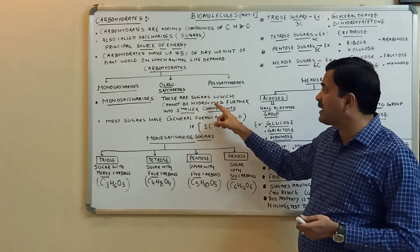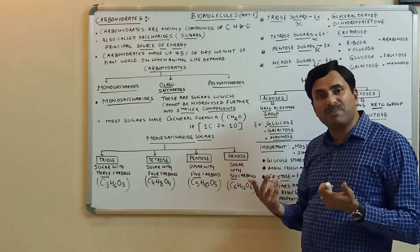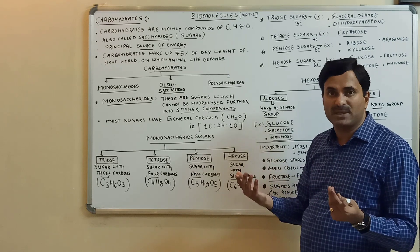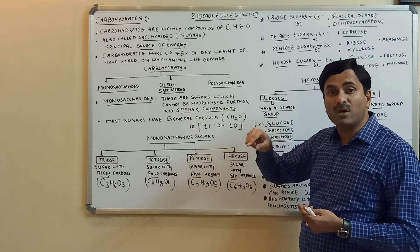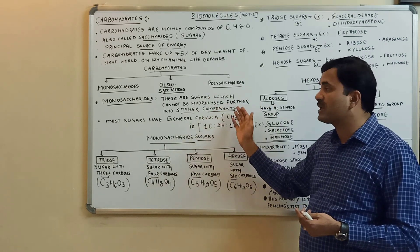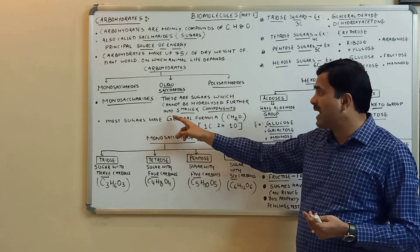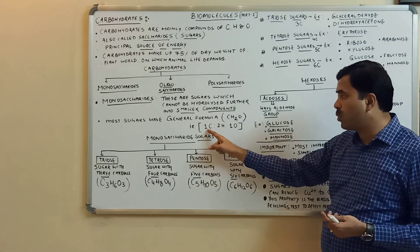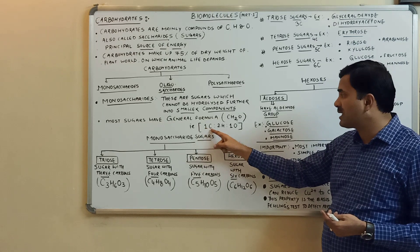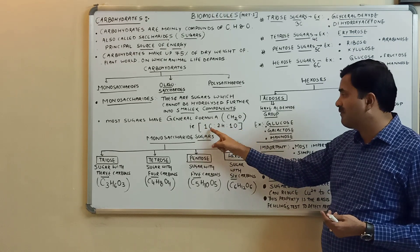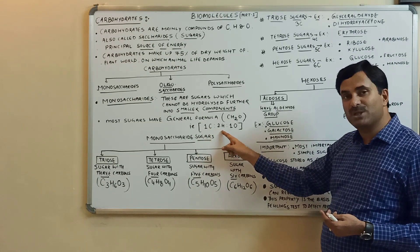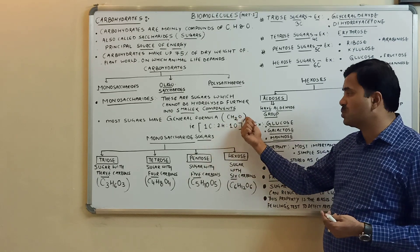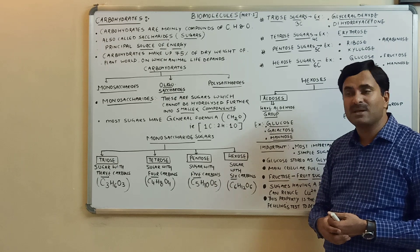In this video we will discuss monosaccharides particularly. These are sugars which cannot be hydrolyzed further into smaller components — they are the simplest sugars. Most sugars have the general formula CH₂O, meaning for every one carbon there are two hydrogens and one oxygen.